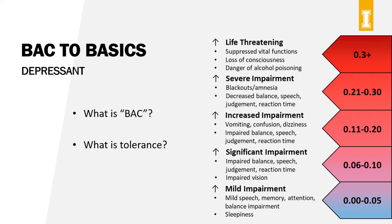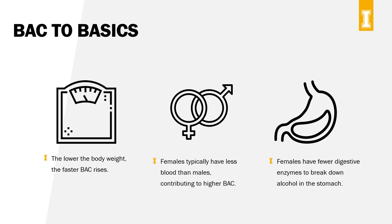Alcohol poisoning occurs at around 0.3 BAC and can lead to death if vital functions are shut down. Females typically have less blood than males, contributing to a higher BAC — for example, the average male might have 5.5 liters of blood while a female of similar build might have closer to 5 liters. The same amount of alcohol in 5 liters is more concentrated and yields a higher BAC. Additionally, females have fewer digestive enzymes to break down alcohol, so more alcohol is absorbed into the blood, causing BAC to rise more quickly in females than males.